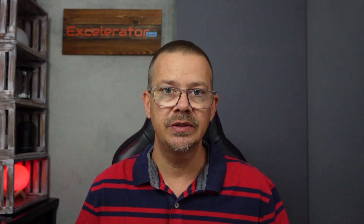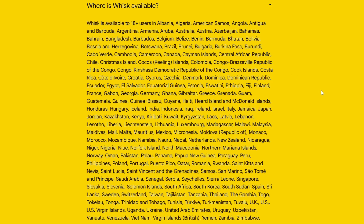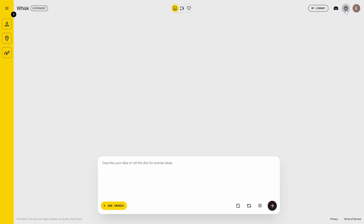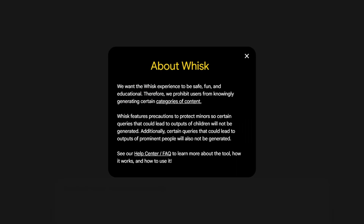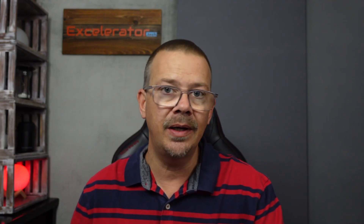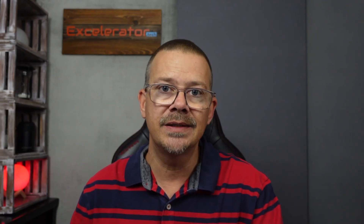Whisk is available in a lot of locations but not everywhere. There's a list — it's too long to read, but you can pause and see if your location's on there. There's also a smaller list of places where Whisk Animate is available. As for how many images you can create in a single day or month, I assume there's some kind of limit but I haven't found that listed anywhere. I've created a lot of images on Whisk — a lot in the same day — and it hasn't shut me down yet. It seems to be pretty generous compared to other free tools I've used.